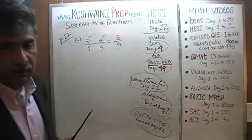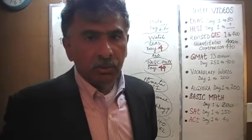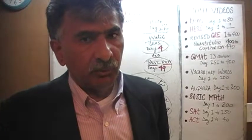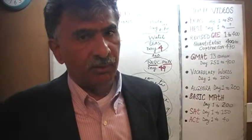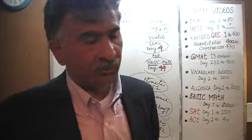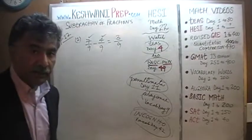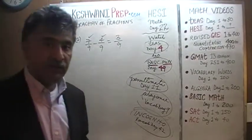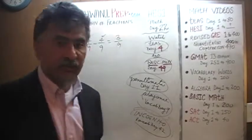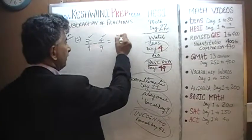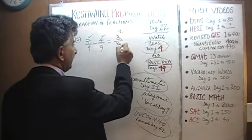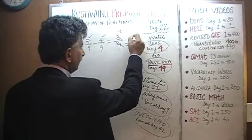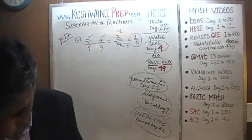At the end, all we have to do is make sure the answer is in its most reduced form. 3 over 9 can be reduced — 3 and 9 have a common factor of 3. Let's divide top and bottom by 3: we get 1 on top and 3 on the bottom. Therefore the final answer is 1 third.